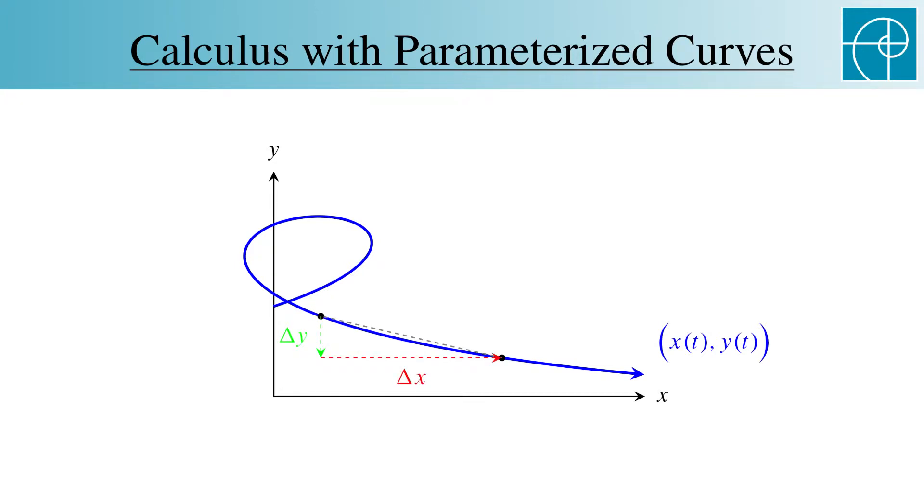Their ratio is the slope of the secant line. Note that we need to indicate a direction for the changes in x and y, since either or both could be negative. In this case, the change in y is negative, so that line's arrow points down.